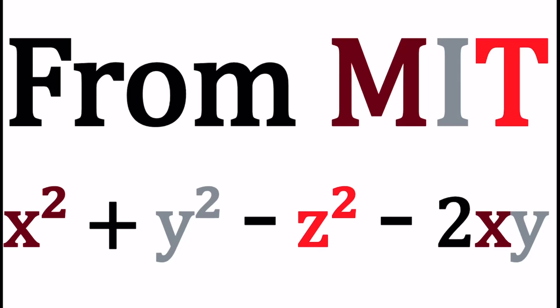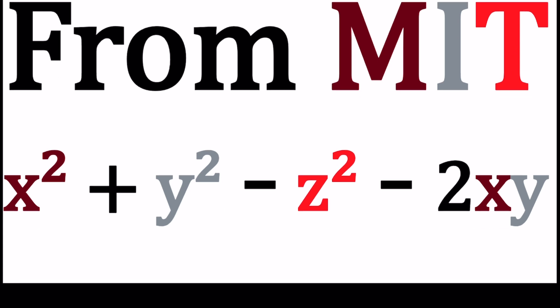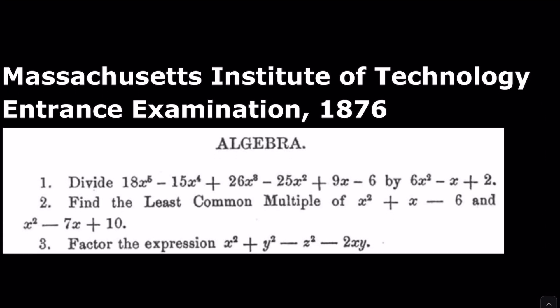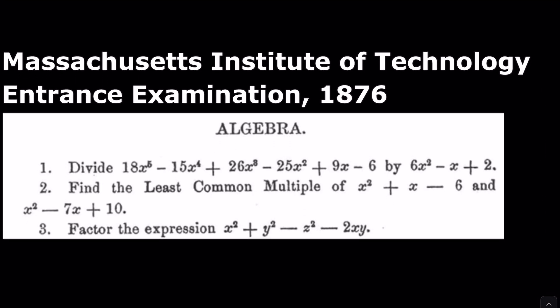Hello everyone. In this video, we're going to be solving a problem from MIT. We have x squared plus y squared minus z squared minus 2xy. And we're going to go ahead and factor this expression. So this problem is from MIT entrance exam 1876. And let's see how we can factor this expression.